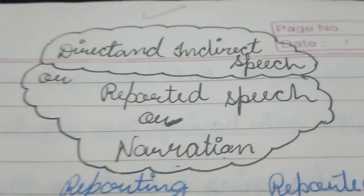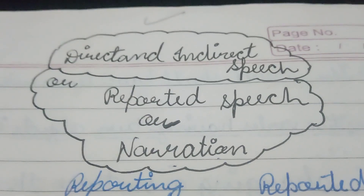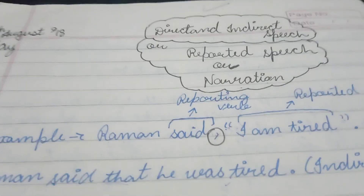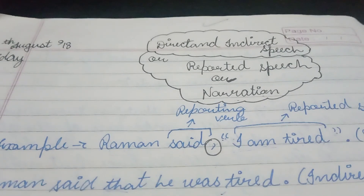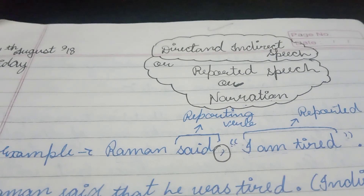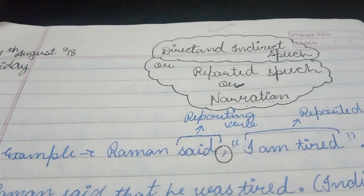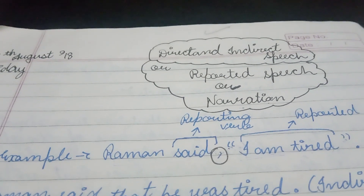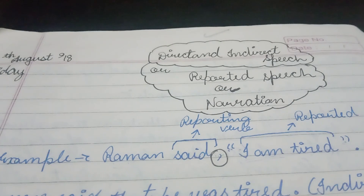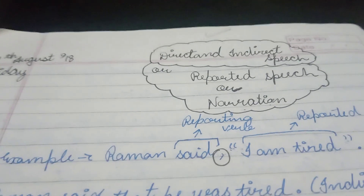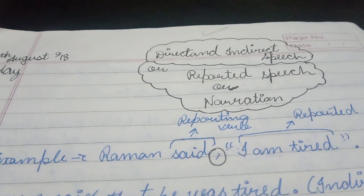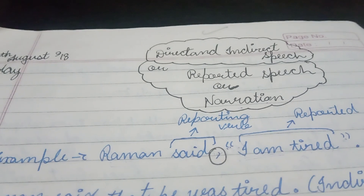To begin with this topic, I will pick up an example. The example is: Raman said, 'I am tired.' Now, Raman is the subject, and 'said' is the reporting verb because he said something.